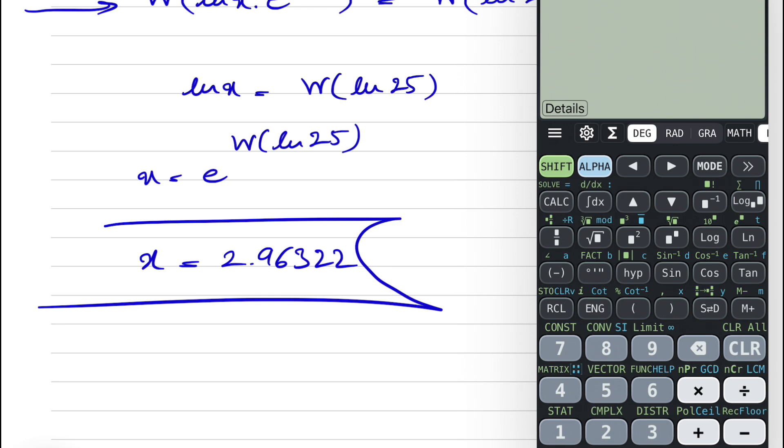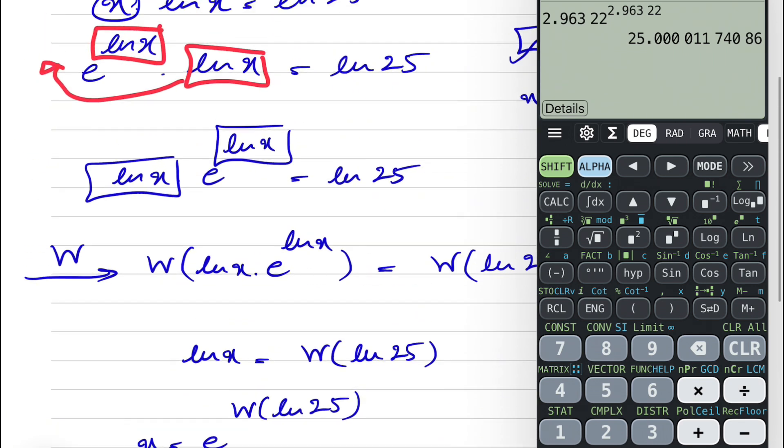So basically we have x to the power of x, so our x is 2.96322 and in the exponent we have the same thing 2.96322, and so we can see that we get the 25 that we have in the question.